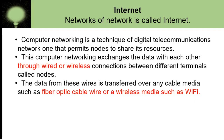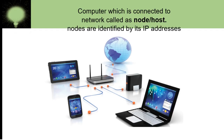Nodes exchange data through wired or wireless connections. There are different types of wired connections — different types of cables such as fiber optic cable, coaxial cable, twisted pair cable, etc. — which we will learn in detail later. Wireless media such as Wi-Fi — Wi-Fi stands for wireless fidelity — is also used. Computers connected to the network are called a node or host.